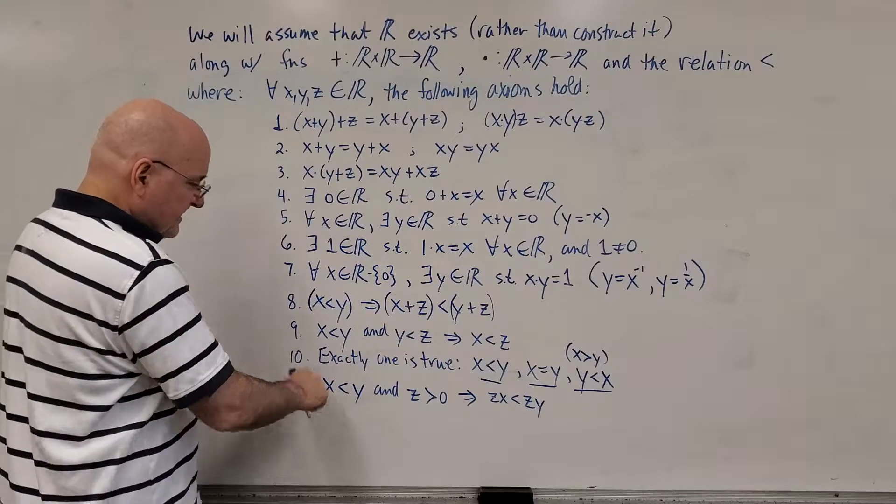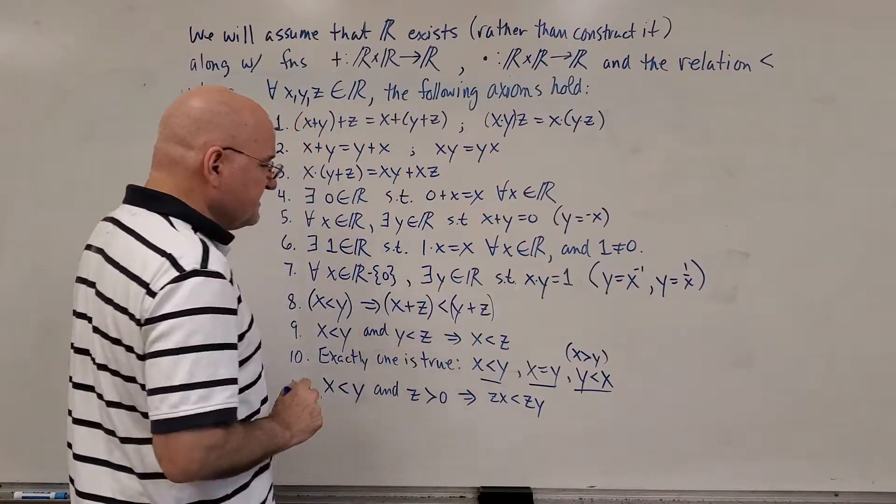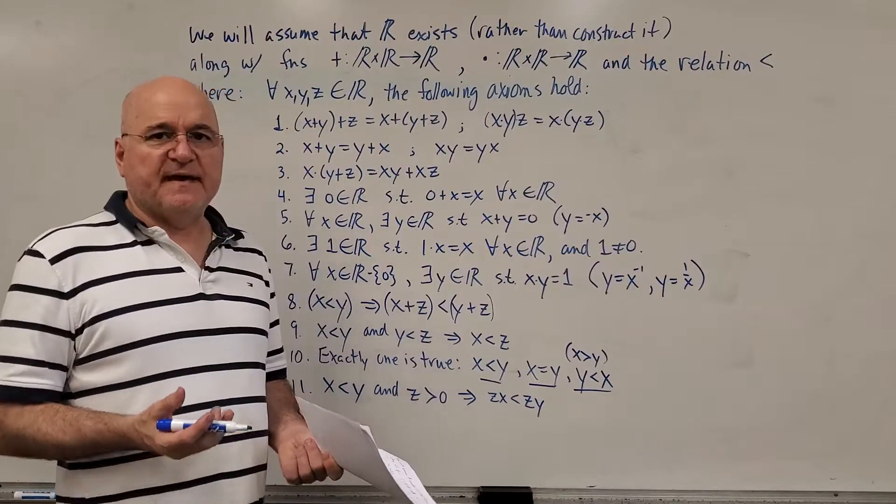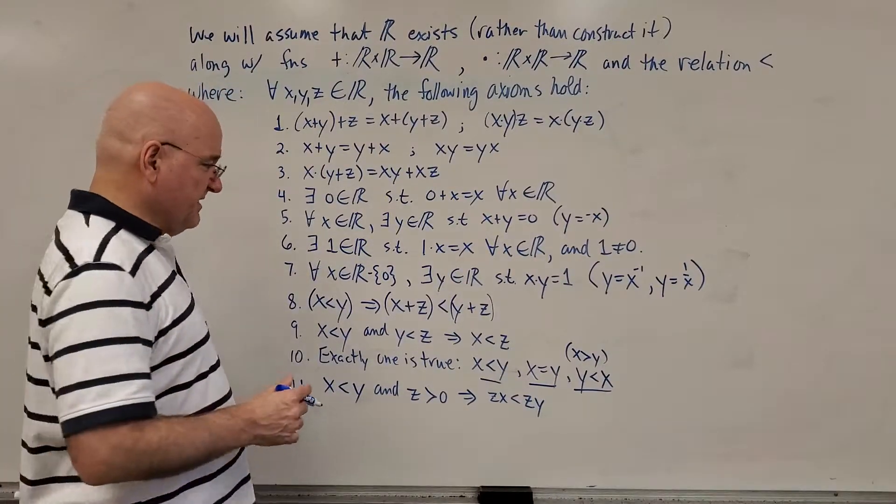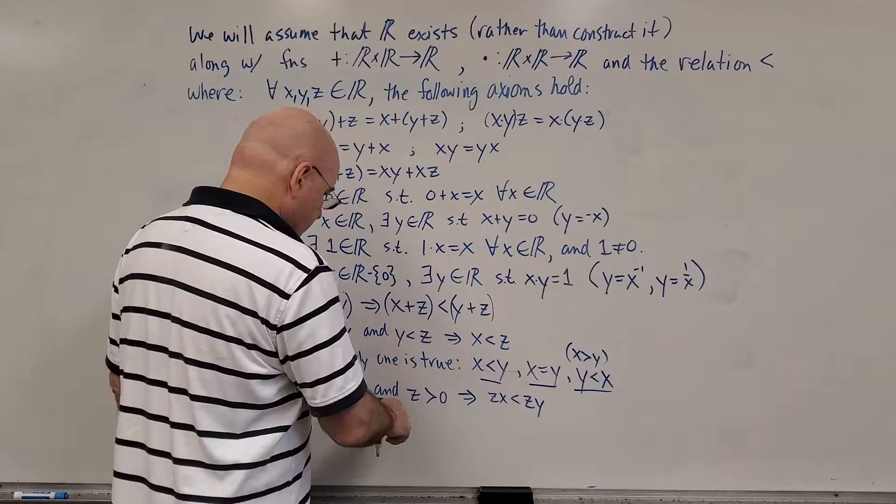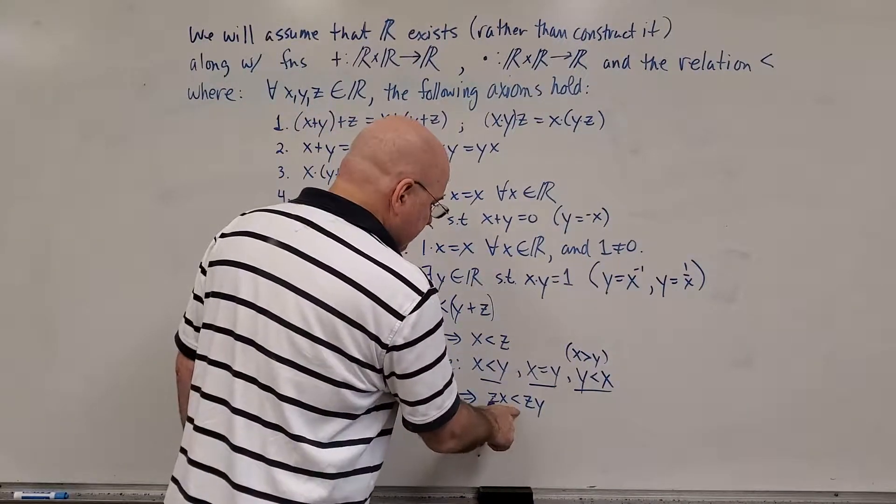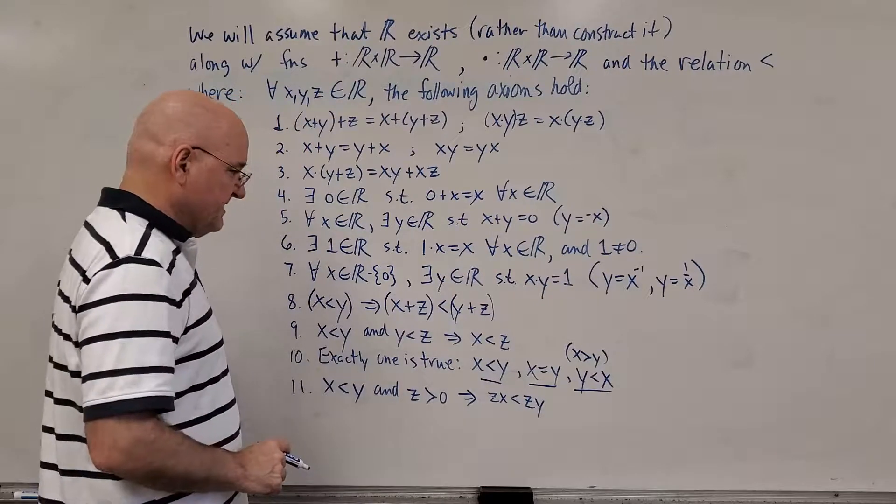Number 11. X less than y and z, a positive number, means that if I multiply both sides of the inequality by that positive number, the inequality does not change. So z greater than zero, we get xz is also less than zy.